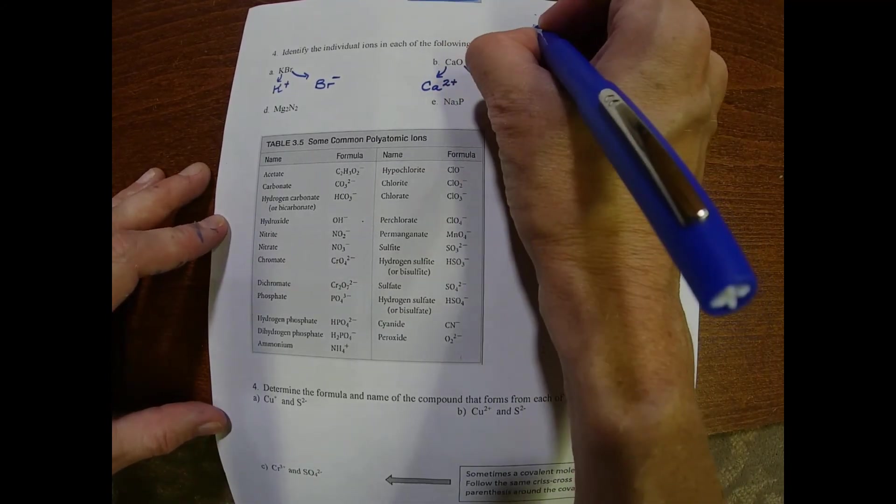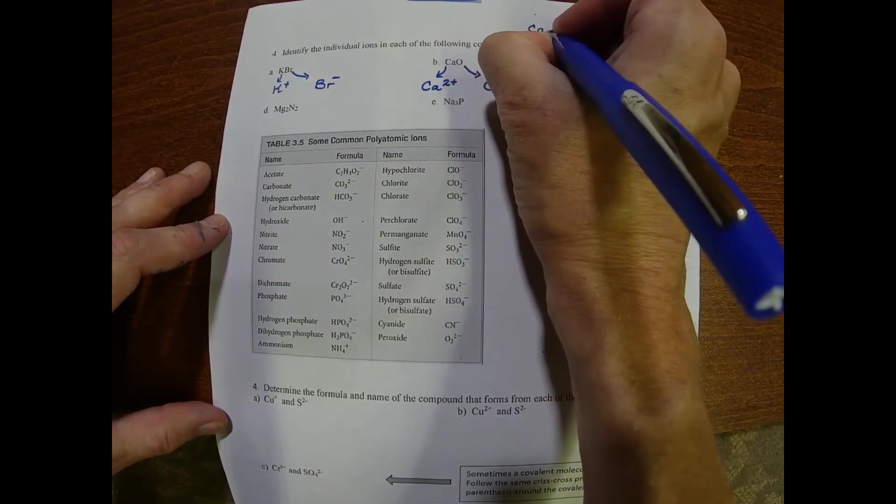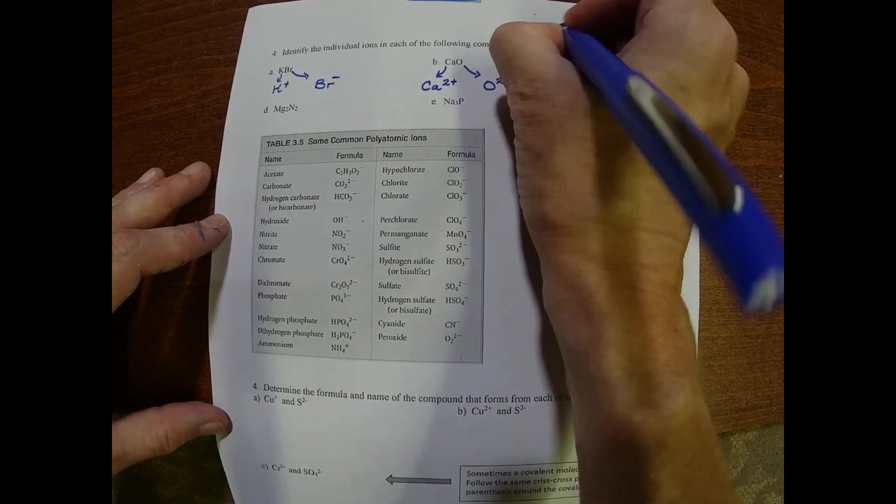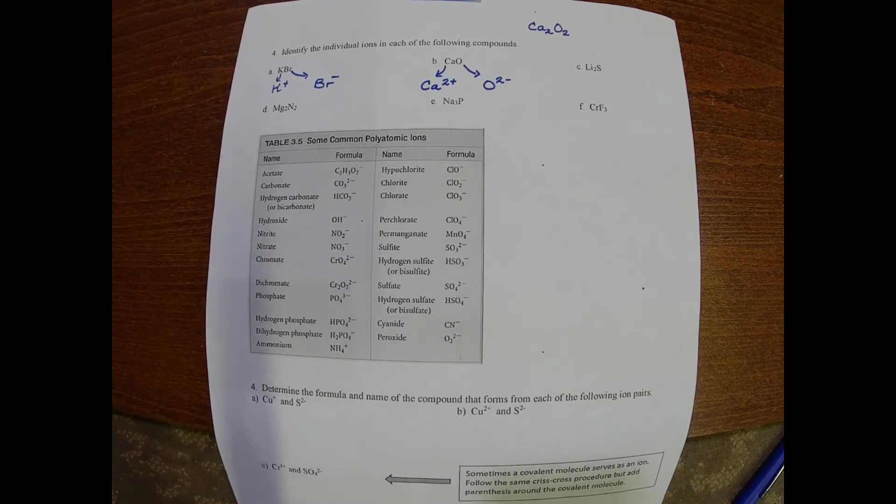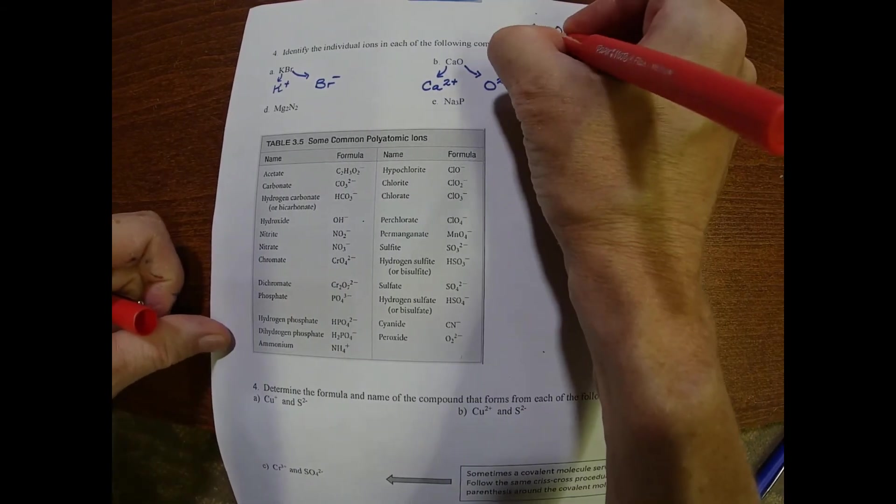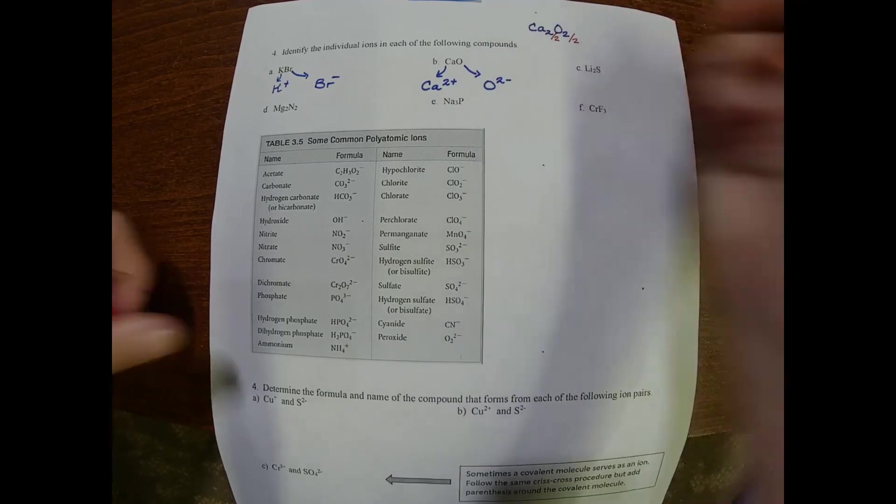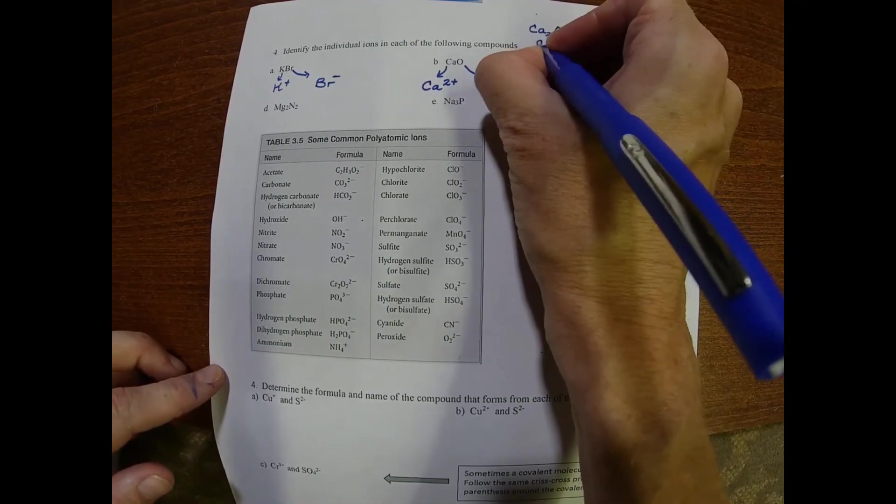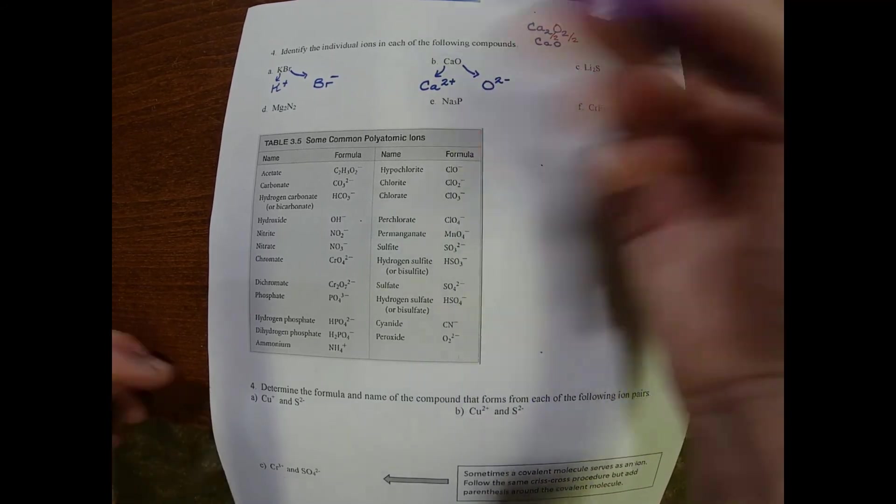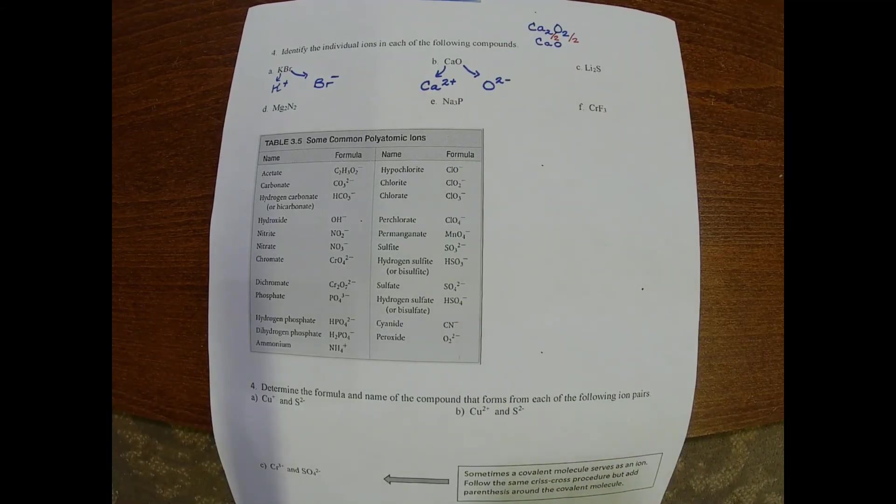We're always going to reduce. You can initially crisscross the 2's giving you Ca2O2, but just like we did in the earlier exercise, we're going for the empirical formula so I'm going to divide each of these by 2, leaving me with CaO which is what they wrote. So they reduced it. Just be careful when we're looking and trying to think of the ions that it originally came from.